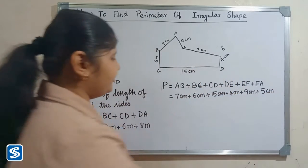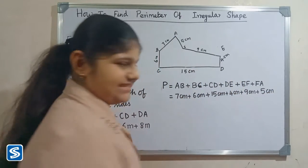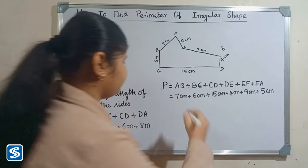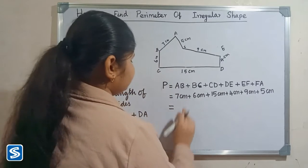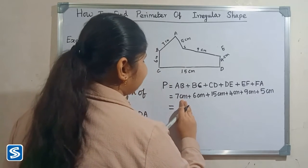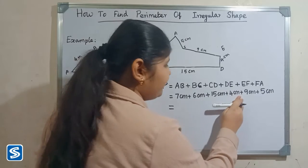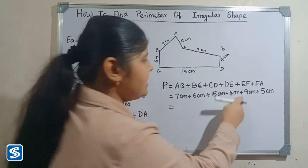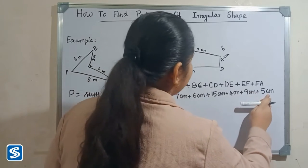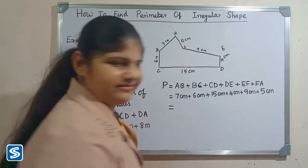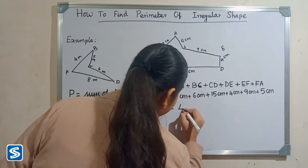Now we have to add the length of all the sides. So 7 cm plus 6 cm plus 15 cm plus 5 cm plus 9 cm plus 5 cm equals 47 centimeters.